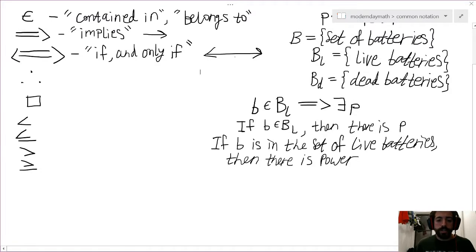Alright, so another example now using if and only if. We could say something like b is a member of BD, the set of dead batteries, if and only if there is no or there does not exist power. Right, so I introduce a new symbol here but it's just the negation of that backwards E we saw in the last example. There exists, so if we put a slash through it, it's there does not exist. Okay, I'm not going to write this out in English, for your practice I'll let you do that.